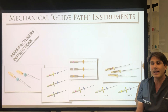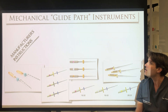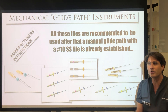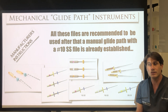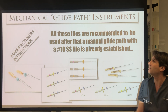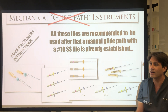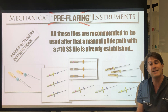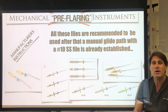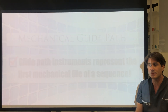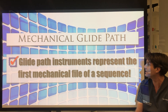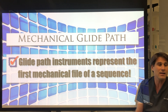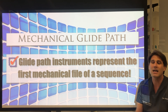When speaking about mechanical glide path instruments available on the market today, the instructions given by manufacturers state that all these files are recommended to be used after the manual glide path with a stainless steel size-10 instrument. This means these are not really glide path instruments — they are pre-flaring files, given the definitions we have established. The glide path has already been established by a size-10 stainless steel file, and these instruments only pre-enlarge the canal before the use of other mechanical files. So these mechanical glide path files represent only the first mechanical file of a sequence, even if named differently.